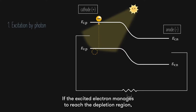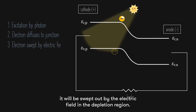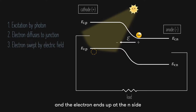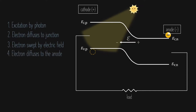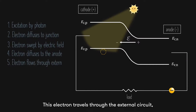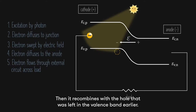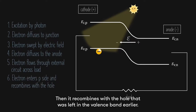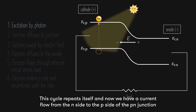If the excited electron manages to reach the depletion region, it will be swept out by the electric field in the depletion region, and the electron ends up at the N side. As a majority carrier, the electron diffuses to the anode. This electron travels through the external circuit, through the output device that we want to power, and back to the P side. Then it recombines with the hole that was left in the valence band earlier. This cycle repeats itself, and we now have current flow from the N side to the P side of the PN junction.